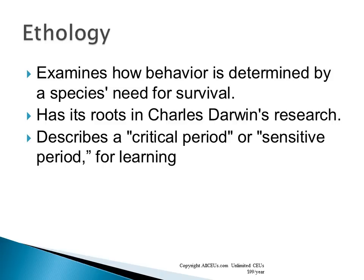Ethology explains that behavior is determined by a species' need for survival, rooted in Darwin's research, and describes critical or sensitive periods for learning. This is not a dominant theory currently, though certain aspects — like critical periods for learning to read and write — remain relevant. As an overall determining theory of child development, however, it hasn't proven broadly useful.